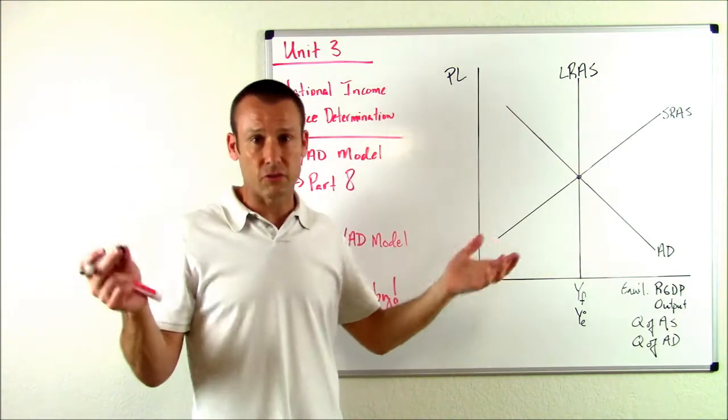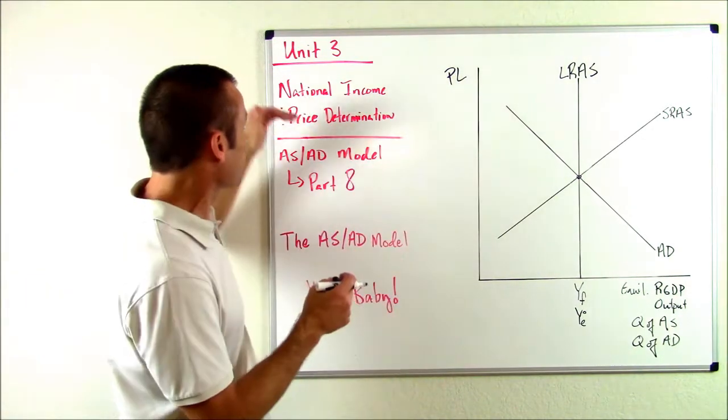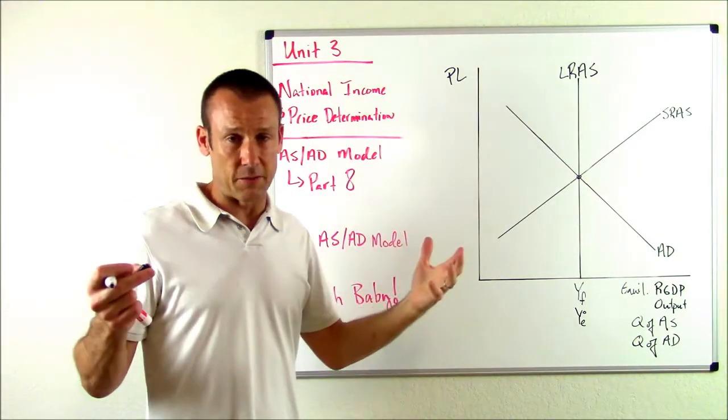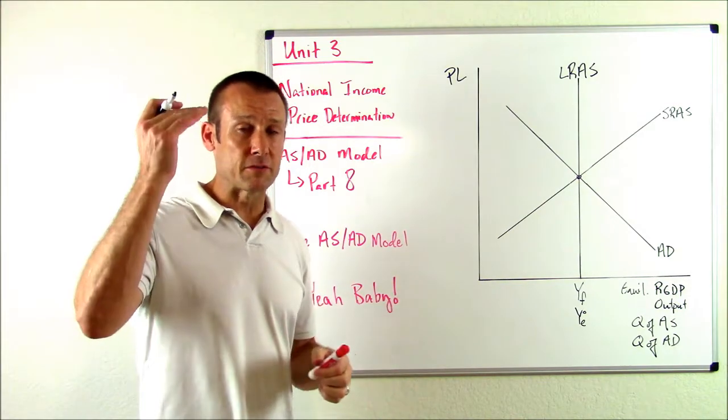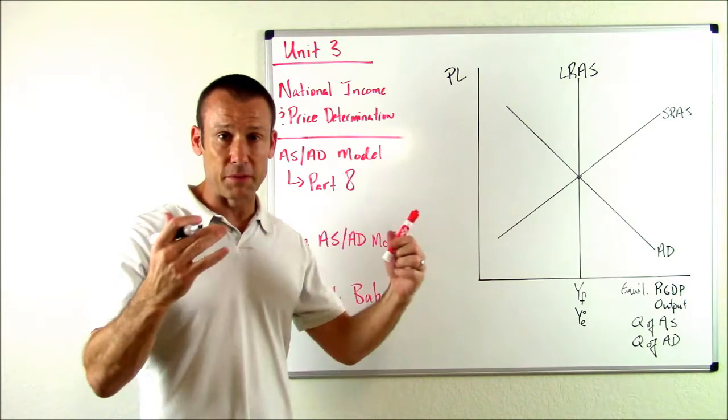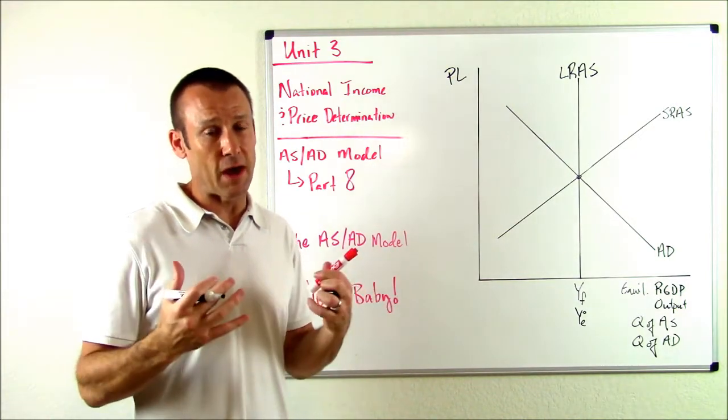Of course, what we want to be able to do is look at changes in the world and figure out what's going to be the impact on national income and price determination. So let's just pick something out there. Let's say that the stock market drops significantly in value, so we get a drop in the stock market.